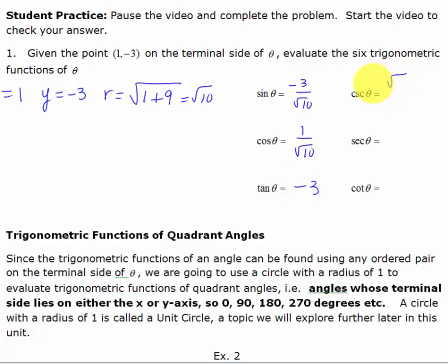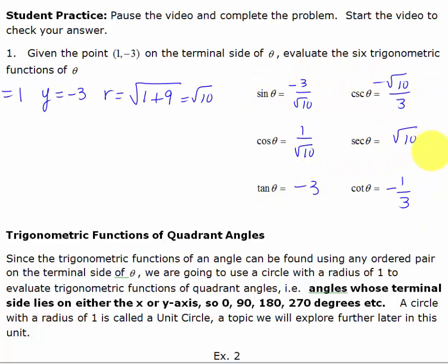The reciprocal functions: cosecant is negative square root of 10 over 3, secant is the square root of 10 over 1, which is just the square root of 10, and cotangent is the reciprocal of negative 3, which is negative 1 third. Notice that four of these functions are negative and two of them are positive. We'll talk more about signs in an upcoming video.